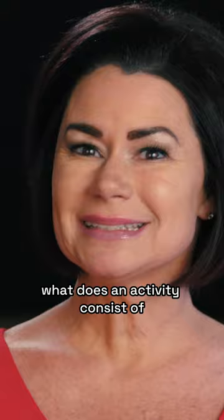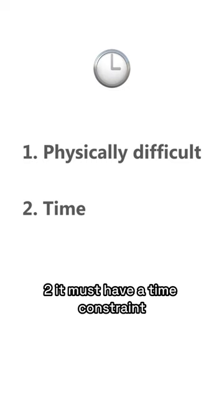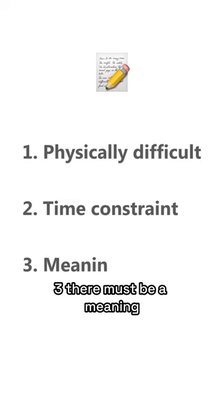What does an activity consist of? Three things. One, it must be physically difficult. Two, it must have a time constraint — this creates a sense of urgency for you. Three, there must be a meaning — the why — a meaning as to why am I doing this? Something that truly moves you as an actor.